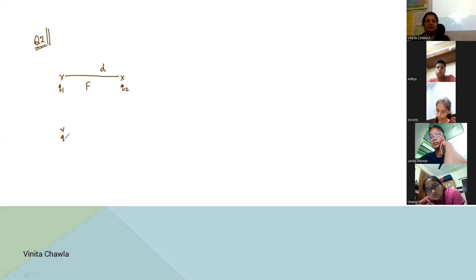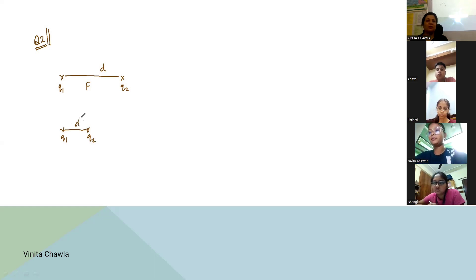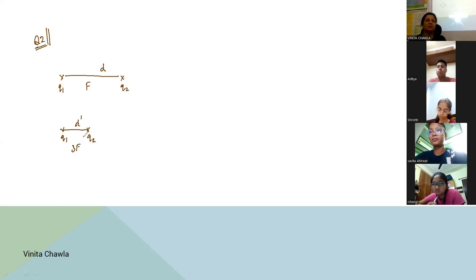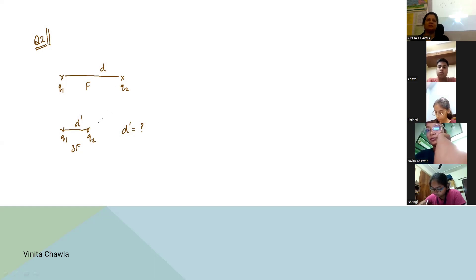How should we change the distance to increase the force? If we want the force to be 3F, the distance should be decreased — only then the force will increase. So we have to find this d′. We are keeping the charges the same but increasing the force to 3 times, and we need to find the final distance d′.